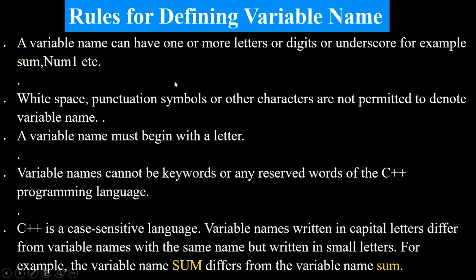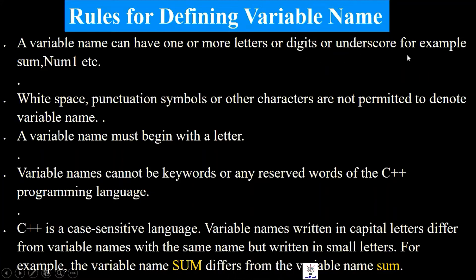Now let's see the rules for defining a variable name. In a variable name we can use letters and digits, and we can also join parts with the underscore sign — for example, some_number. So letters, digits, and underscores are permitted in variable names.